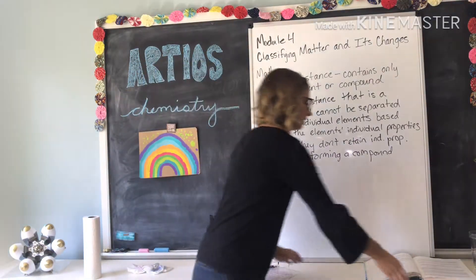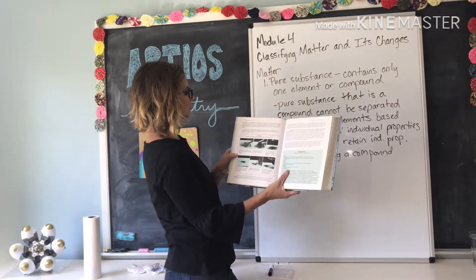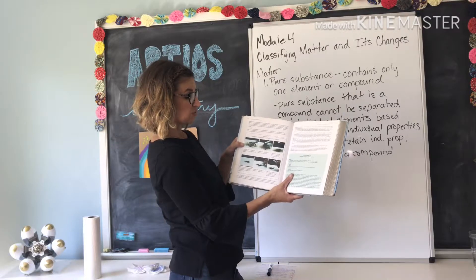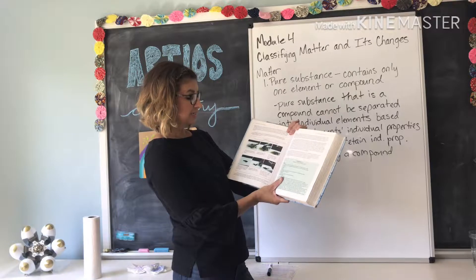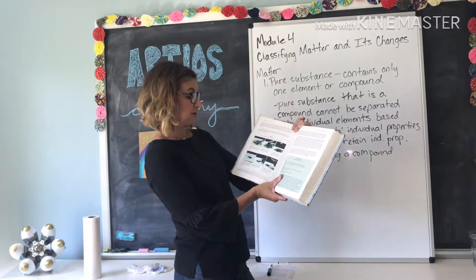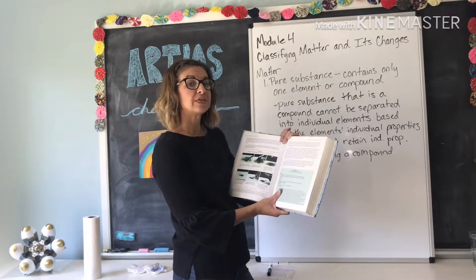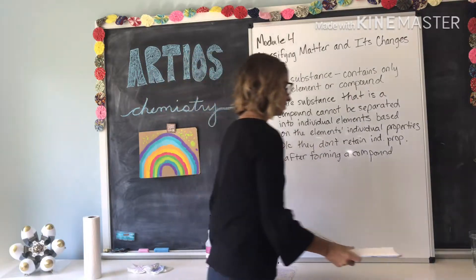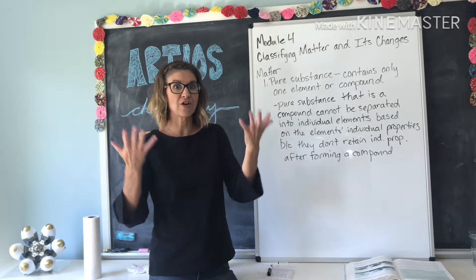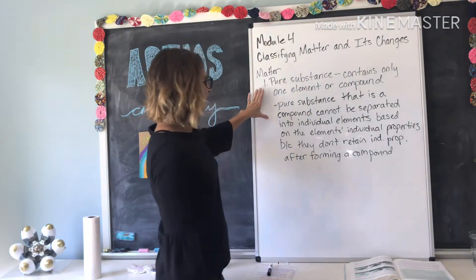Take a look on page 100 in your book. Here we have a sample of sulfur, which is the yellow powder, and iron, which is the black powder. If we mix those together, is that going to be a pure substance? No, it is not, because we can still see that the elements of sulfur and iron are still retaining their individual properties. I can look at that pile and see what is yellow is sulfur and what is black is the iron. It's just mixed together but hasn't actually formed a compound, so that would not be an example of a pure substance. In a pure substance, you cannot separate out the individual elements based on their properties because they no longer have their own elemental properties — they are a compound and have new properties based on that compound.